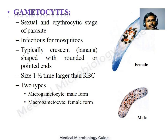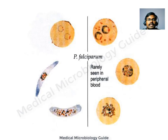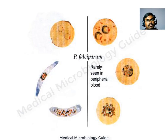For P. falciparum, gametocytes are crescent or banana-shaped structures with rounded or pointed ends. There are two types: microgametocyte (male) and macrogametocyte (female). The ring stage and gametocytes are commonly seen in peripheral smears of infected individuals. Trophozoite and schizont forms are generally not seen in peripheral smears but appear only in severe infections.